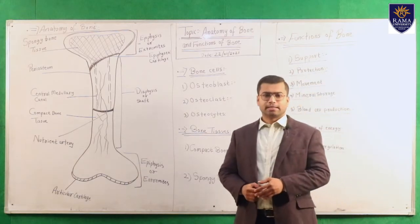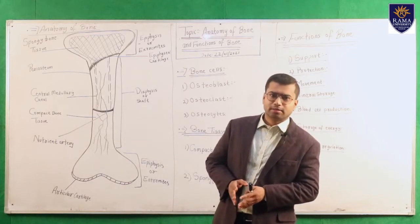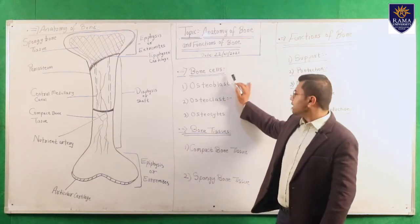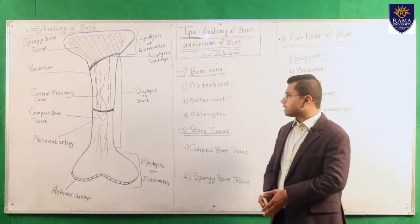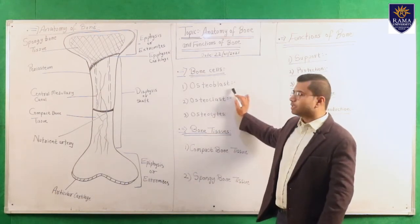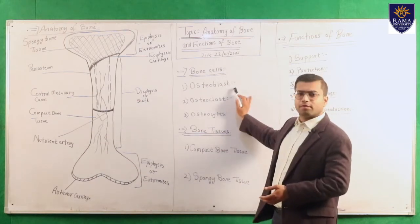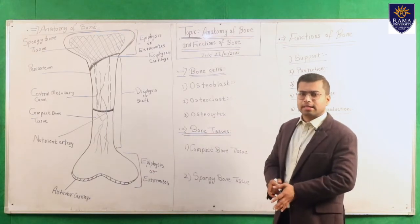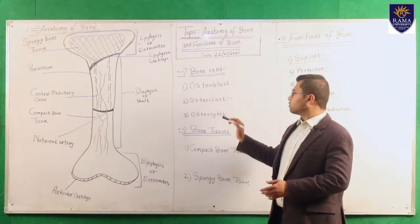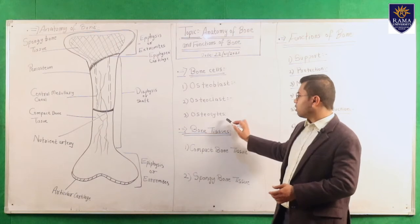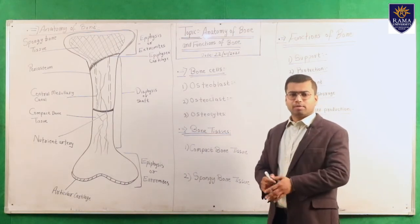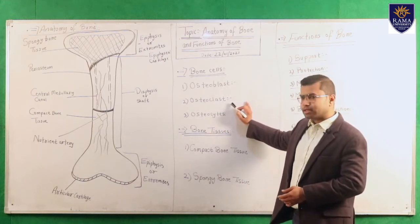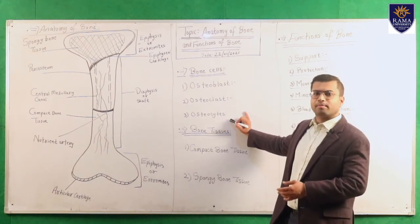There are certain types of bone cells which help in the formation, maintenance, and dissolving of bone. The first are osteoblast cells — their function is the formation of bone, so they are known as bone-forming cells. Next, osteoclast cells are responsible for bone dissolving, so they are known as bone-dissolving cells. Finally, osteocytes are for the maintenance of bone, so they are known as bone-maintaining cells.